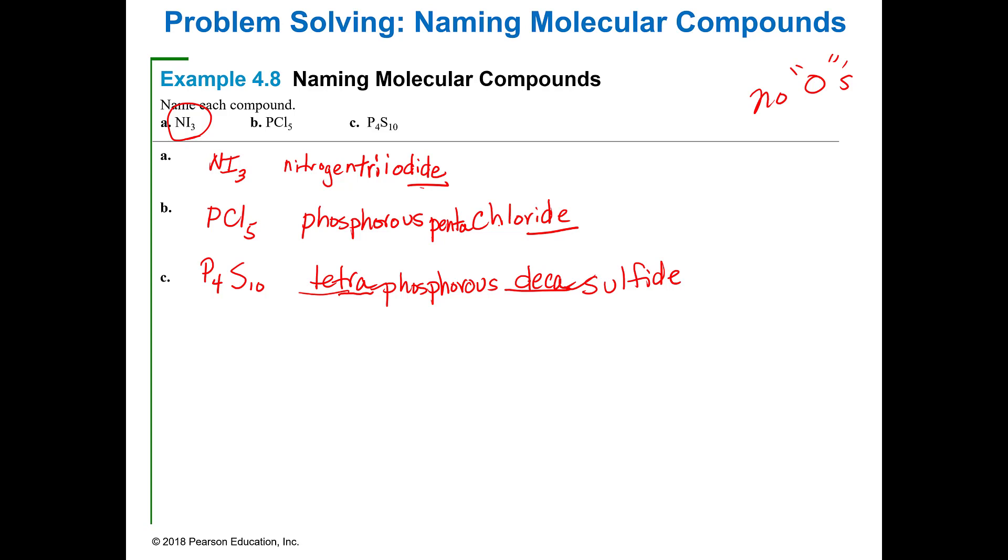As long as you know the prefixes, you won't have any trouble with these. So you're going to name this compound, which you should be able to do. And then you're going to go back the other way and write the formula, which is even easier. Phosphorus tribromide. So that's a P, Br, and tri is 3. Done.